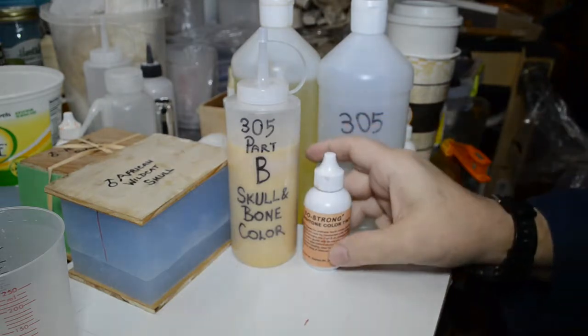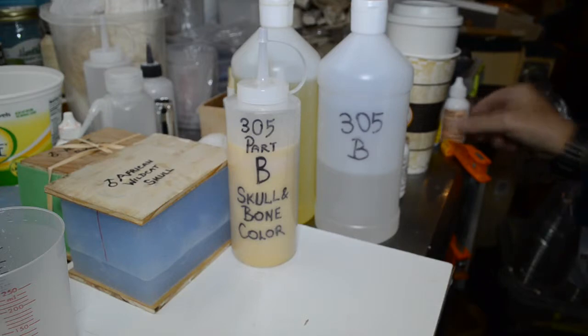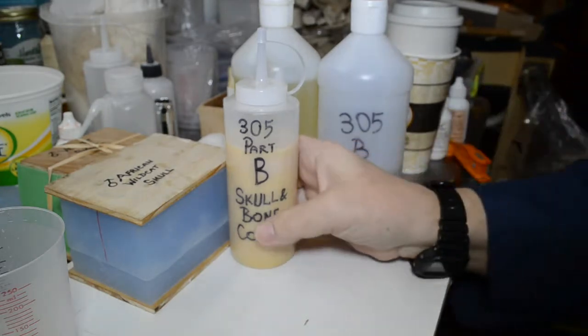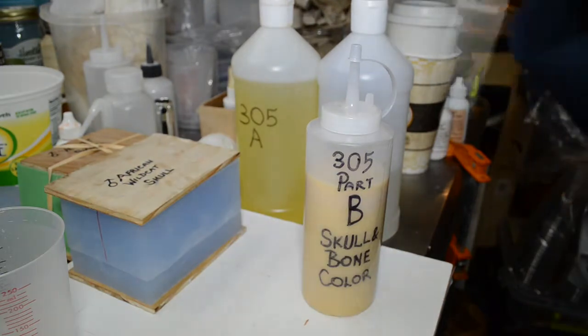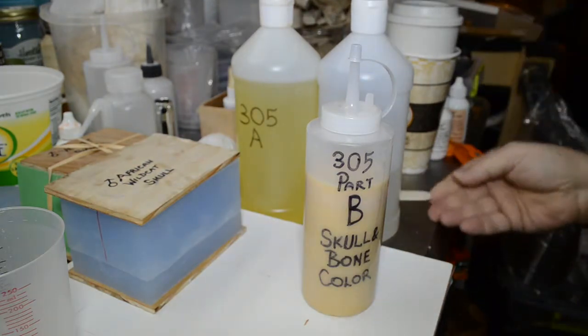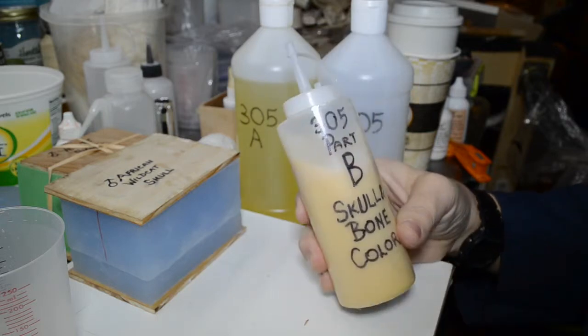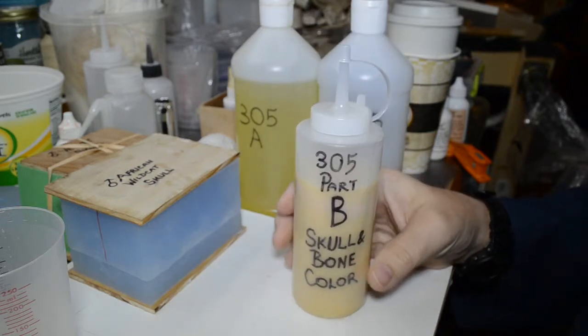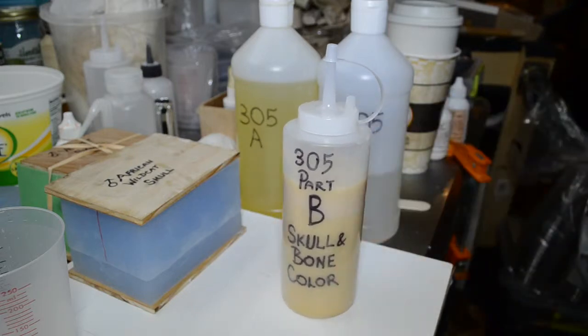I used several drops of the Fleshtone, even more of the SoStrong white, mixed it up thoroughly with a tongue depressor or stir stick, then poured it into this little condiment dispenser bottle, picked it up at Walmart, 97 cents, this is not expensive stuff here.